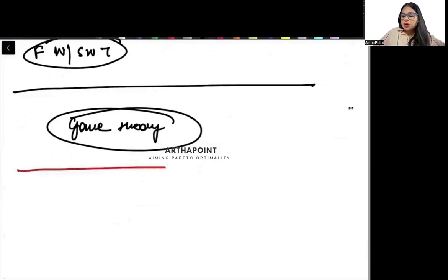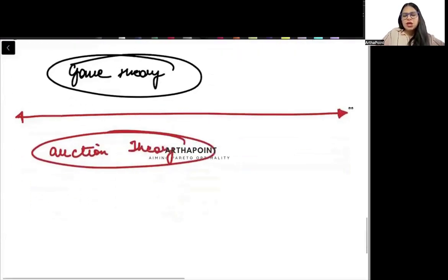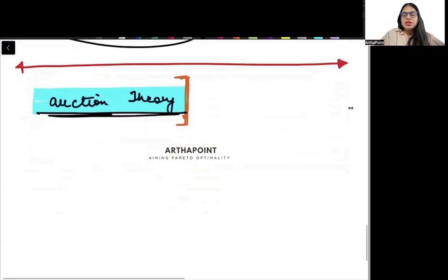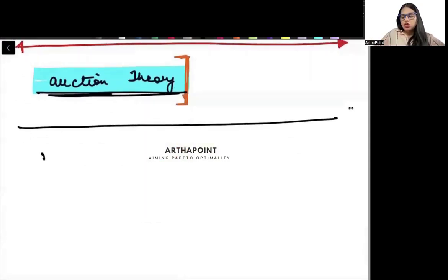Then there can be a question which can be asked on auction theory. Maximum one question will come. So if you think that this is absolutely a new topic and you don't have time to go back to auction theory and redo the auction theory that we have done, then you can skip it. But if you think you have time to do this, I have posted lectures on the portal on auction theory. You can study that a little bit. Please go ahead and read it.